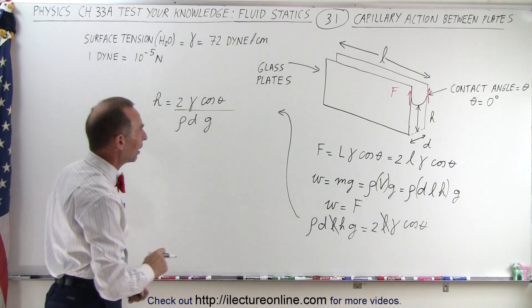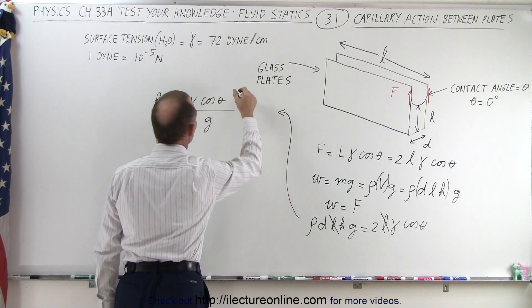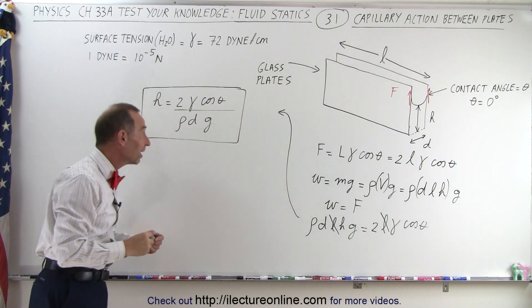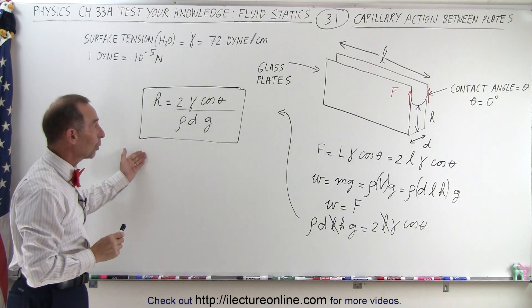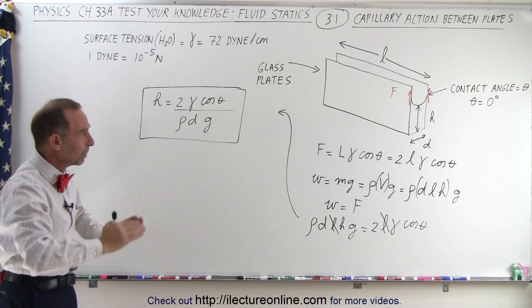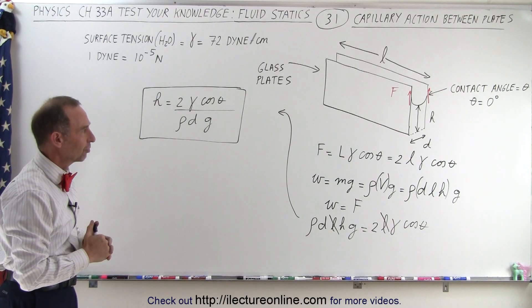Now, normally in this case, the angle is going to be 0, cosine of 0 is going to be equal to 1. But since we just want to have the general equation, let's leave the cosine of theta in there. And that's then the equation that we need to find the height of the water between the plates that's being drawn up because of the surface tension of the water.